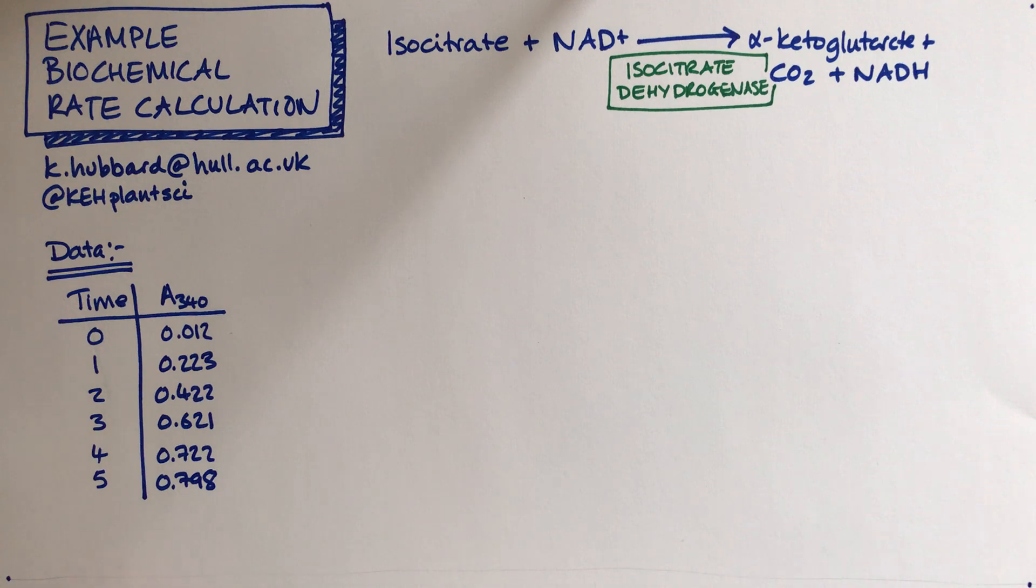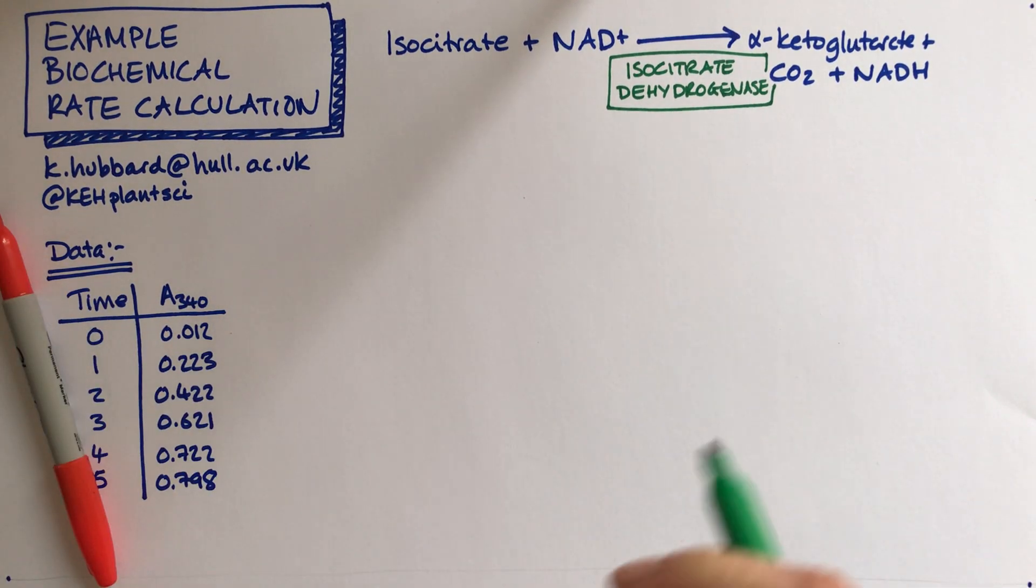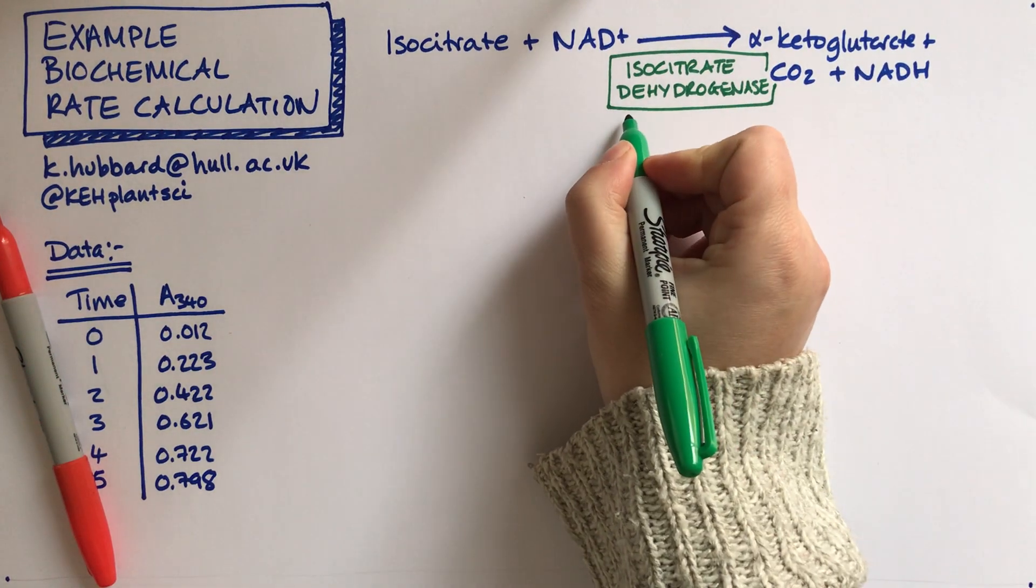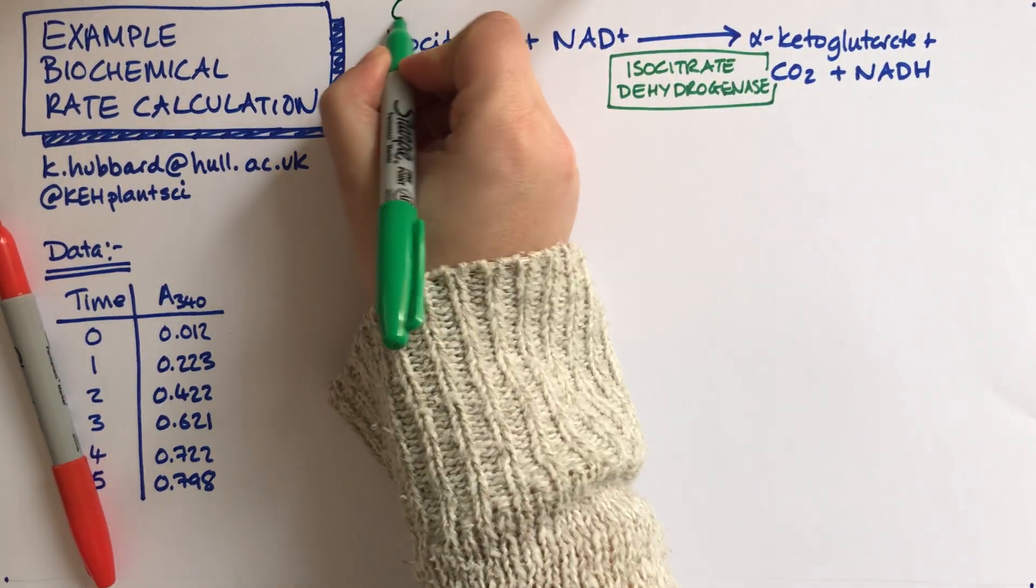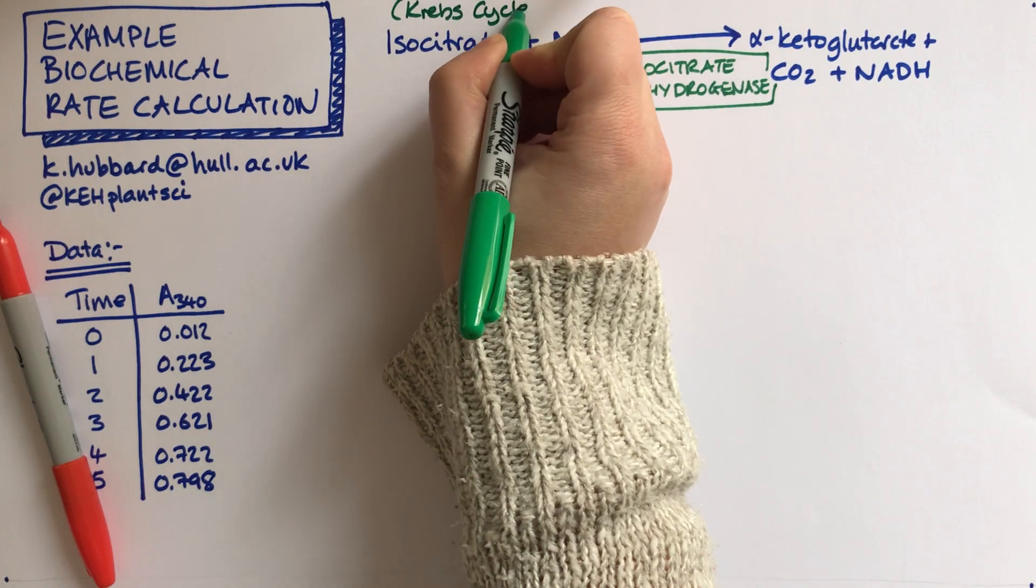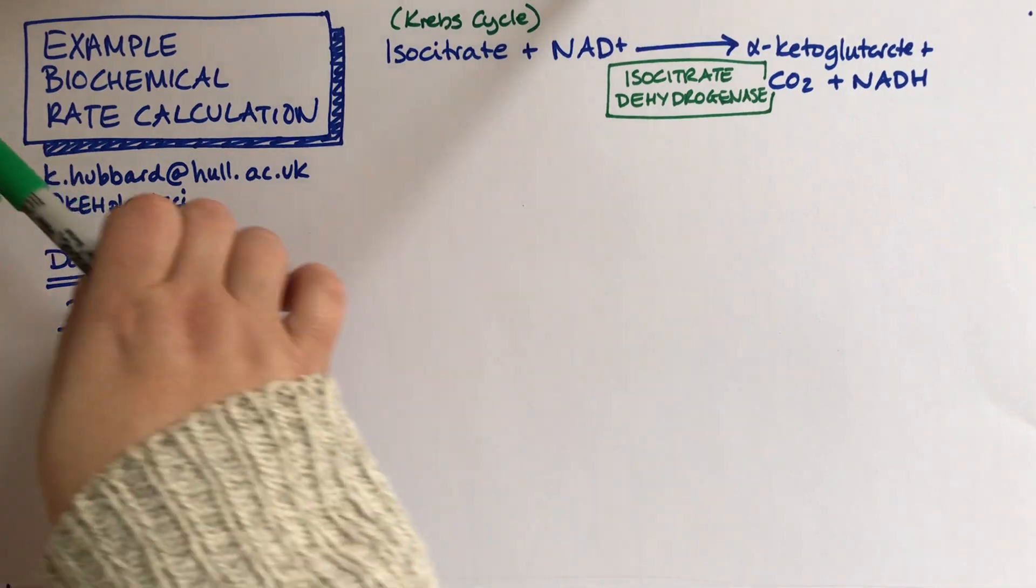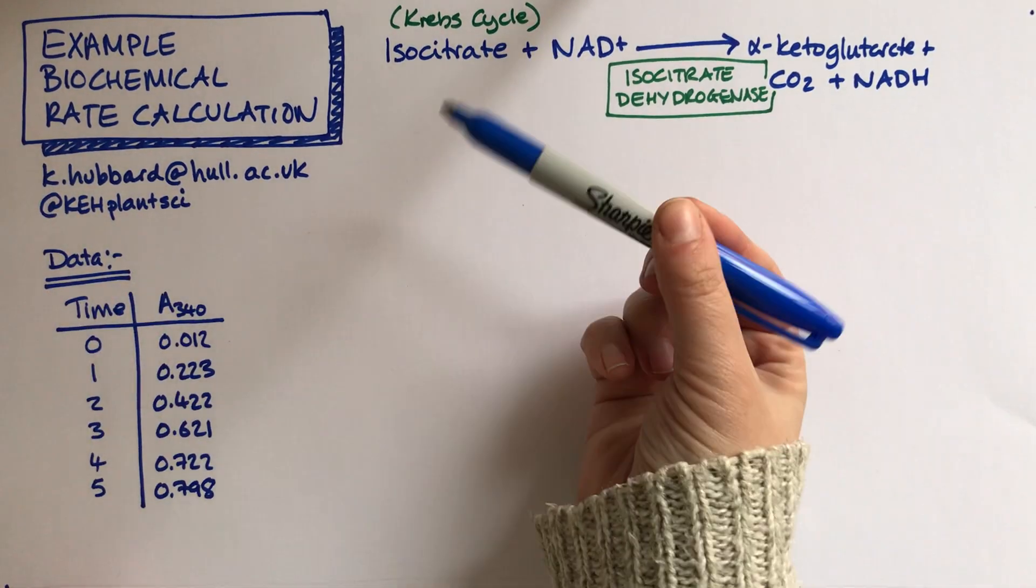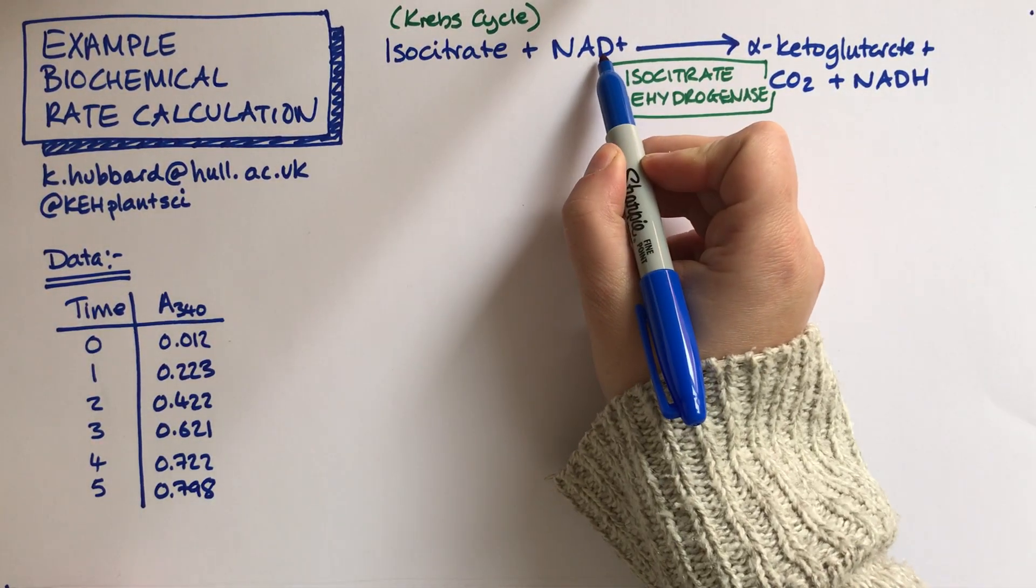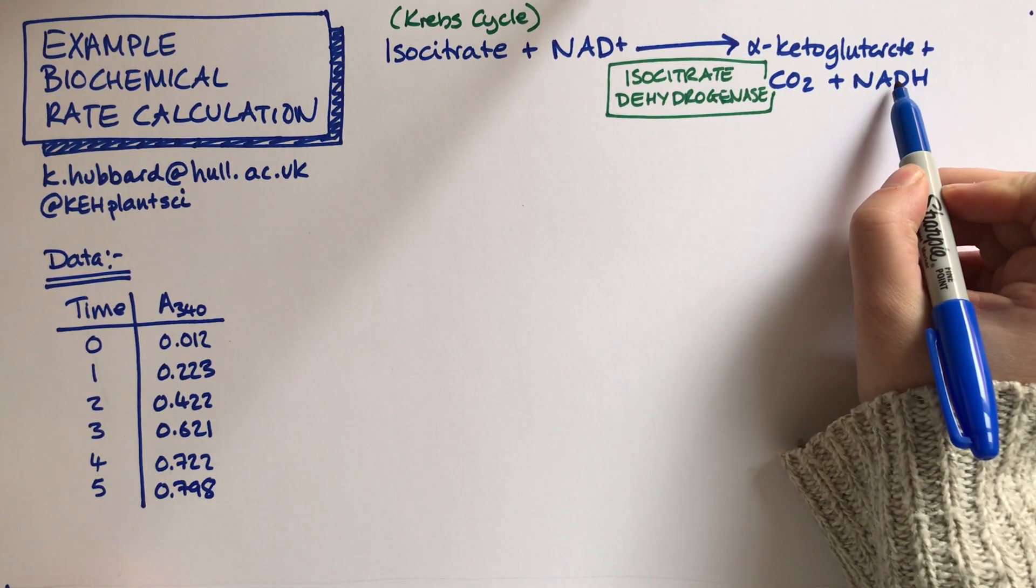The enzyme that we're going to be thinking about is an enzyme called isocitrate dehydrogenase. This is in the Krebs cycle, one of the reactions in the Krebs cycle. What that enzyme does is to catalyse the reaction isocitrate plus NAD plus goes to alpha-ketoglutarate plus CO2 plus NADH.